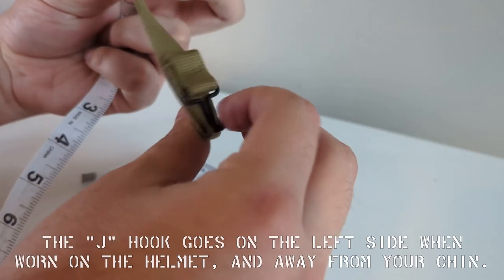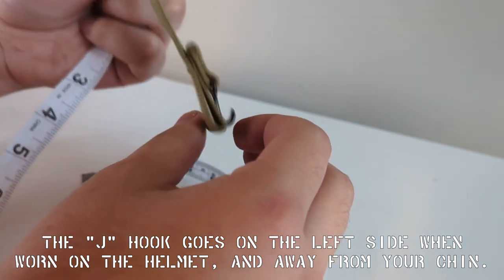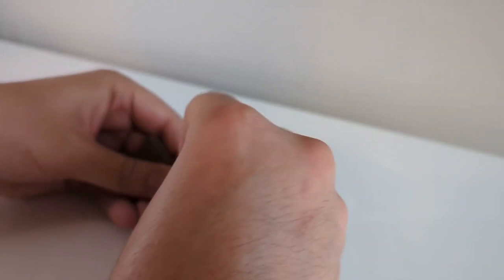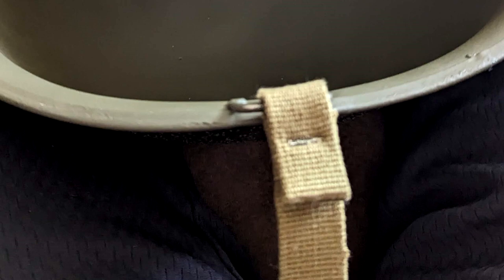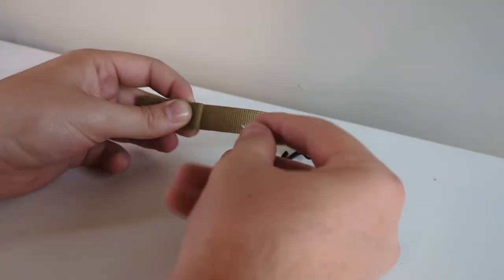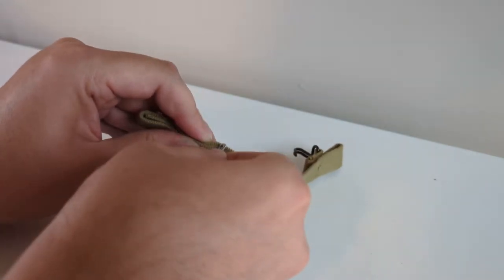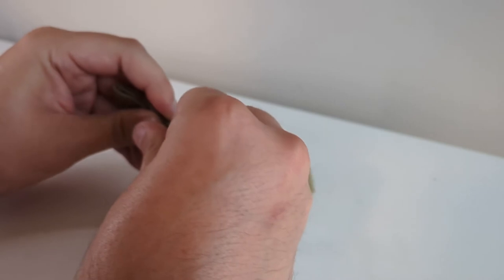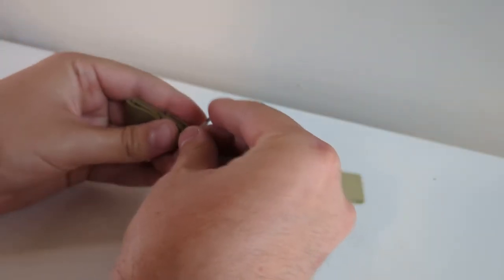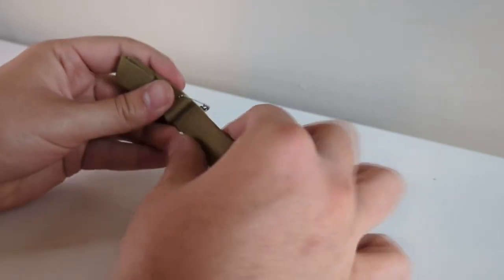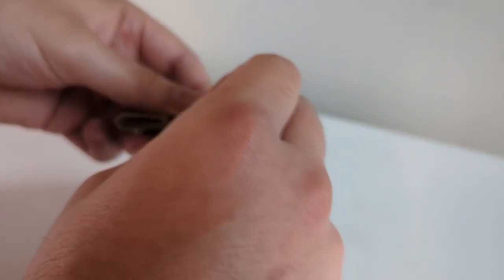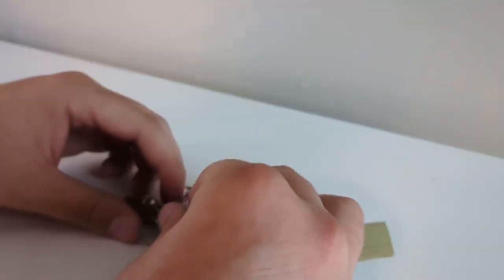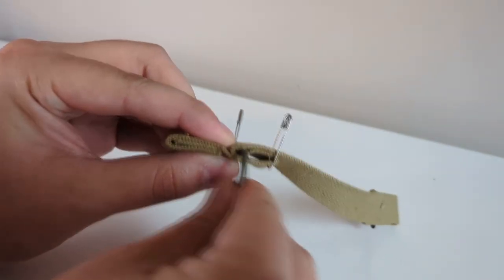Also note I'm doing the left side chin strap. When you're wearing it, the J hook should go on the left side and the flat part should go on the right. Once you have it folded, if you're doing a regular chin strap, you're just going to need to fold it about an inch or so. Fold it twice. Then put your safety pins in here to secure it in place, and another one for extra security. It should look something like that.